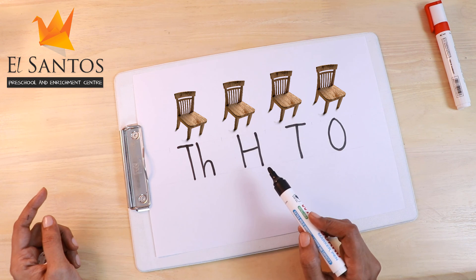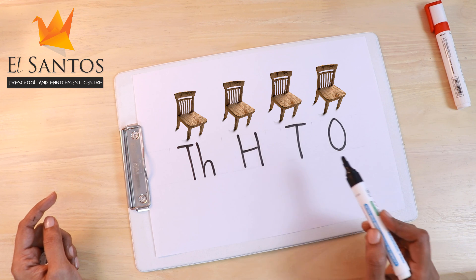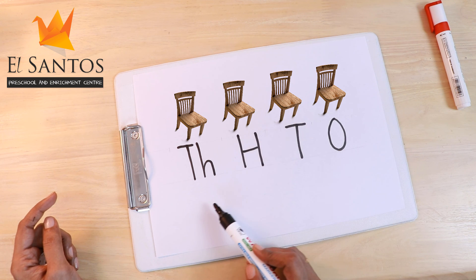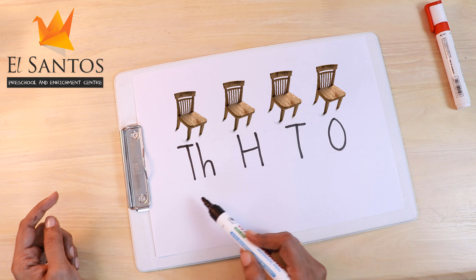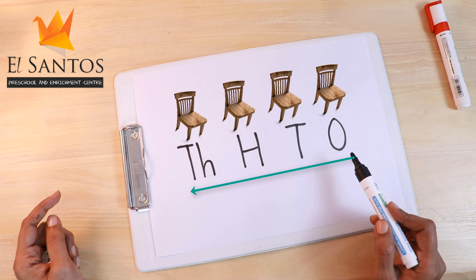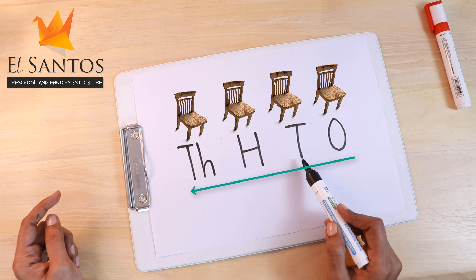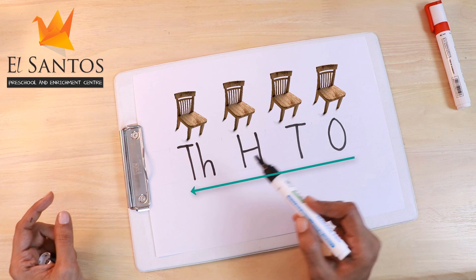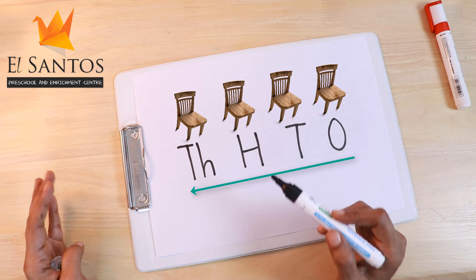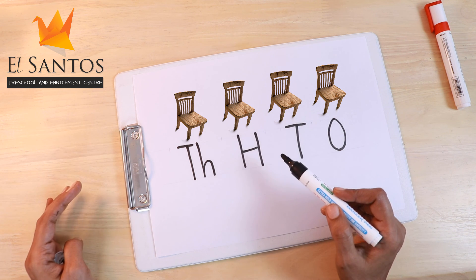Remember that the places start from the right side: ones, tens, hundreds, thousands. Repeat many times and memorize it like a song.